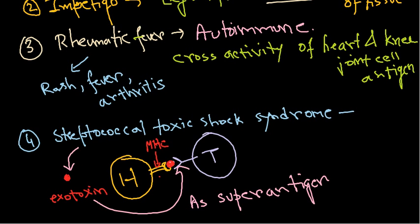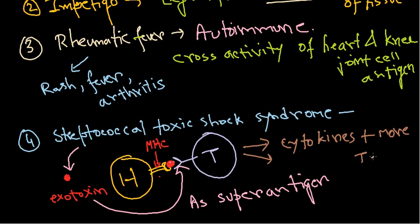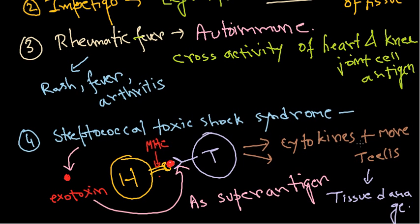As a result of the superantigen activity, the response triggers many more T cells along with cytokines and other chemical mediators like leukotrienes. This ultimately results in massive propagation of T cells, and these chemical mediators damage host tissue. The end product is tissue damage and disease. These are the four major clinical conditions brought about by Streptococcus species.